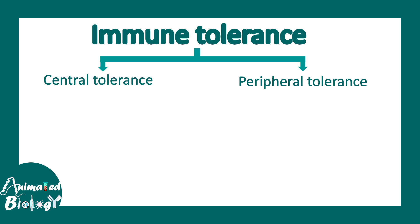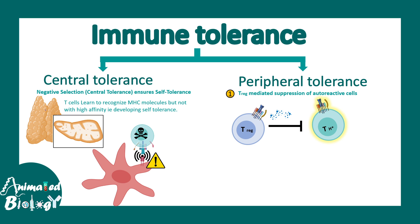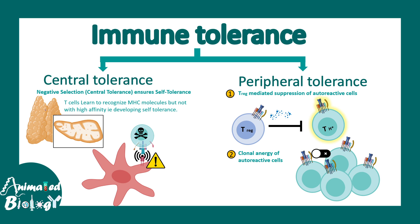Now let's talk about the mechanisms underlying central and peripheral tolerance. Negative selection ensures self-tolerance of T-cells in the thymus. For peripheral tolerance, there are suppressive T-cells known as T-regulatory cells which can prevent autoreactive T-cell activity. There are also mechanisms known as clonal anergy and peripheral deletion, which eliminate autoreactive cells from the periphery.